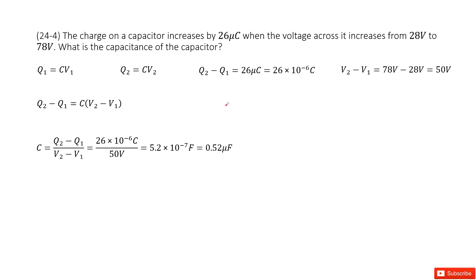We have a capacitor whose charge increased by 26 microcoulombs. At the same time, the potential difference increased from 28 volts to 78 volts. So now we need to find the capacitance for this capacitor.